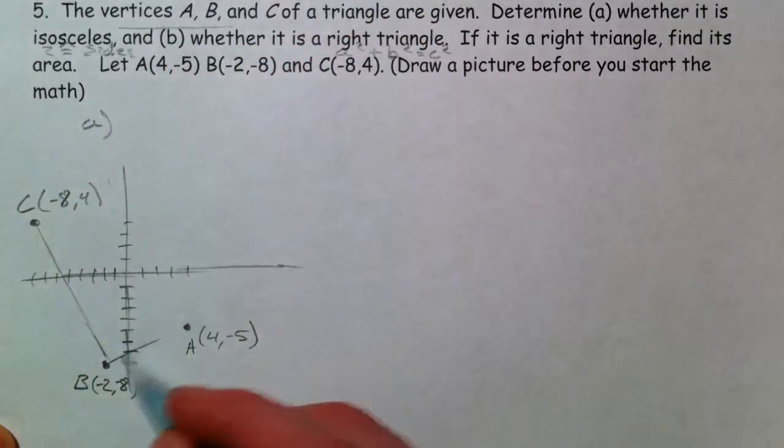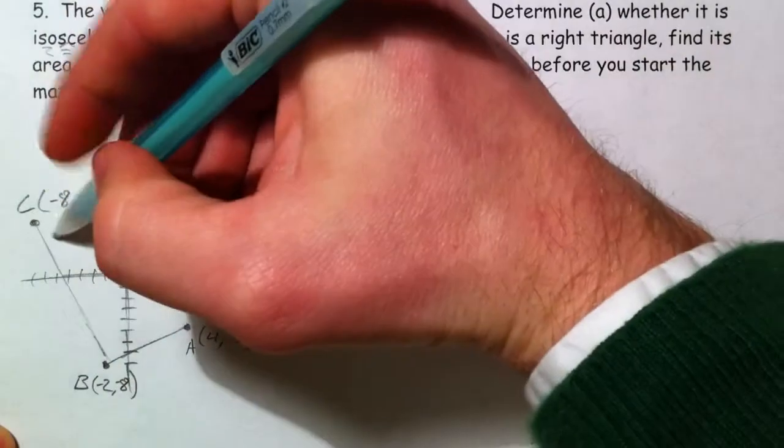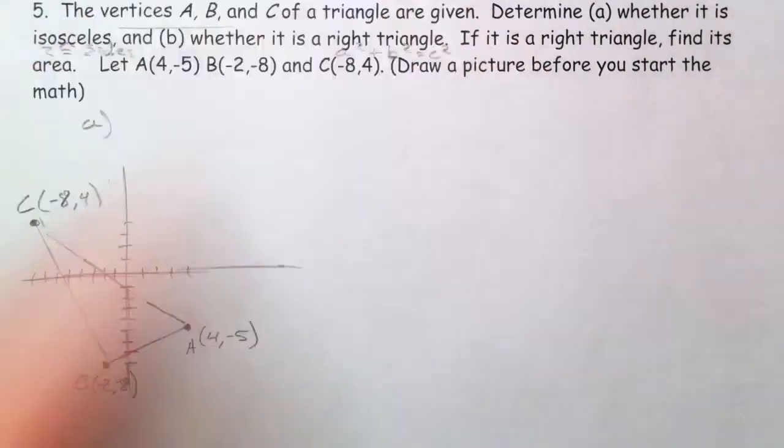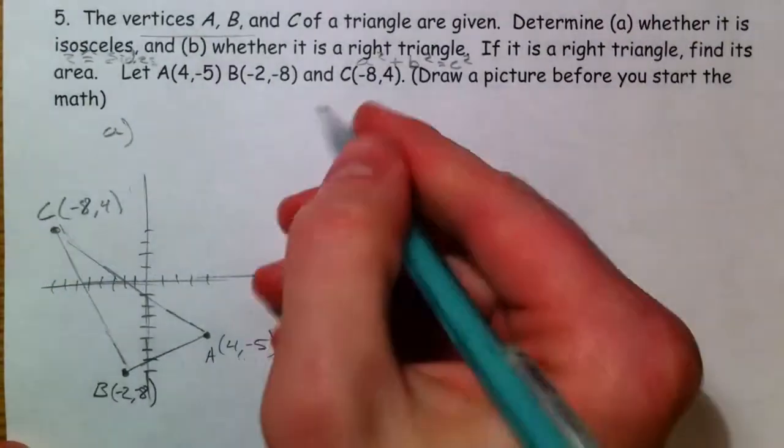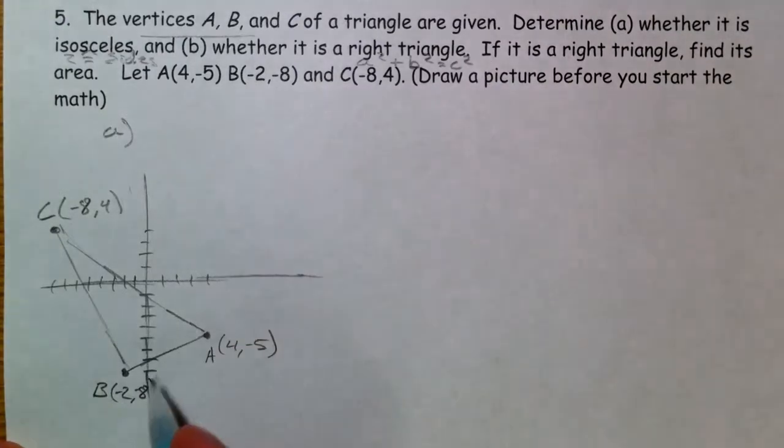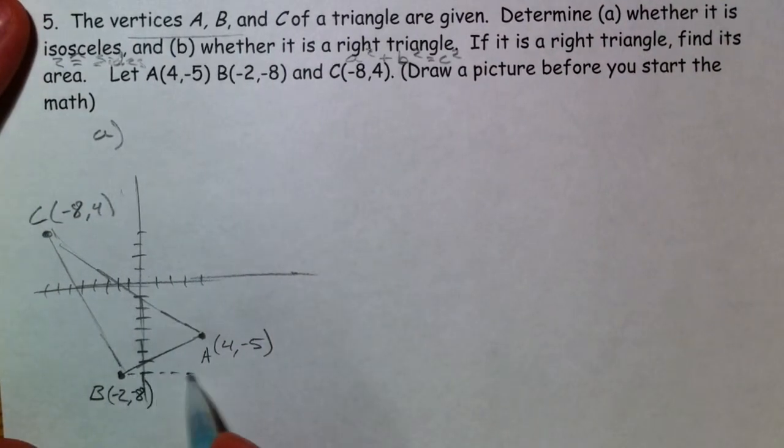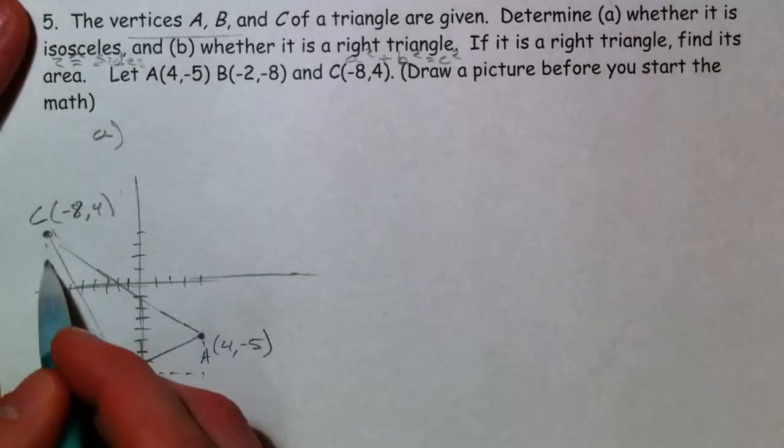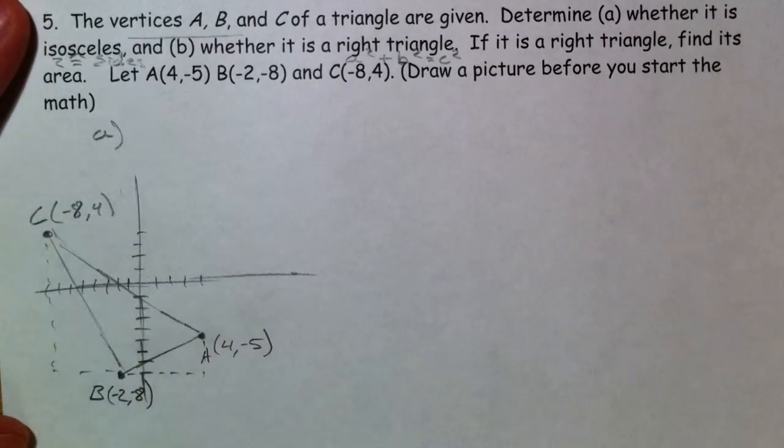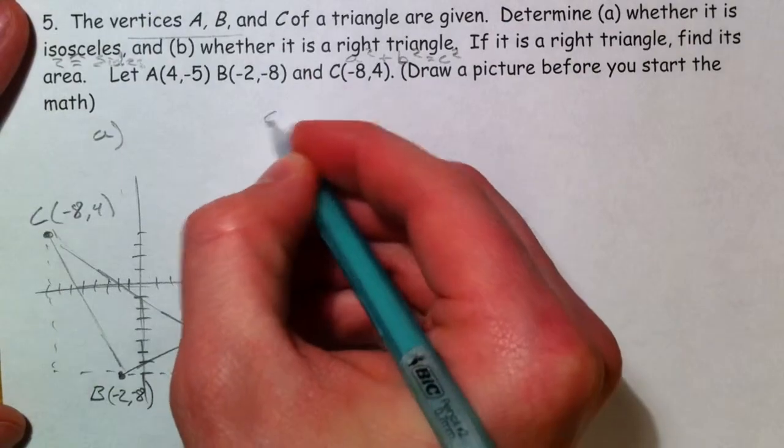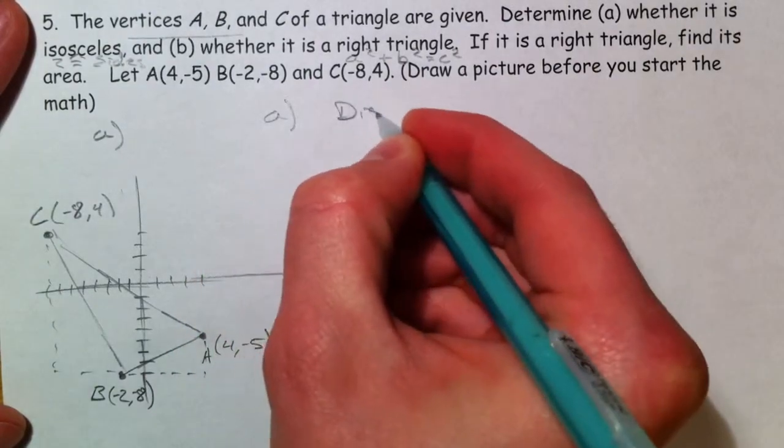Is this isosceles? So we're going to use the distance formula a couple times. What I'm going to do is form my right triangles, just do Pythagorean theorem a couple times. Because that's really all the distance formula is.